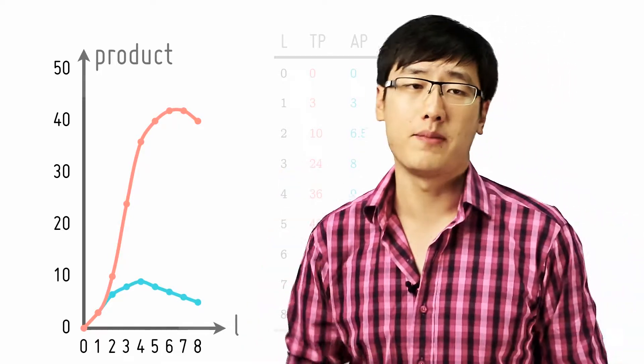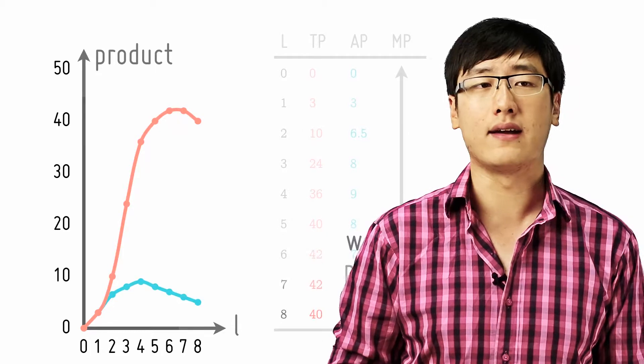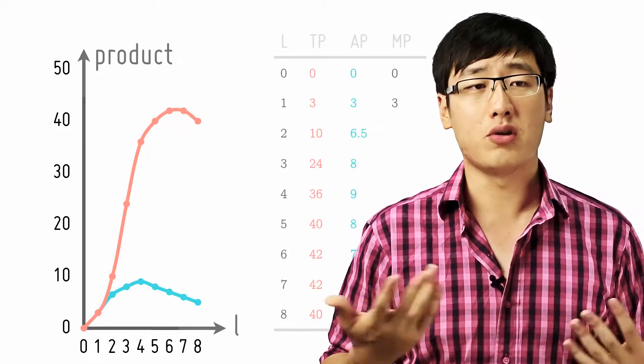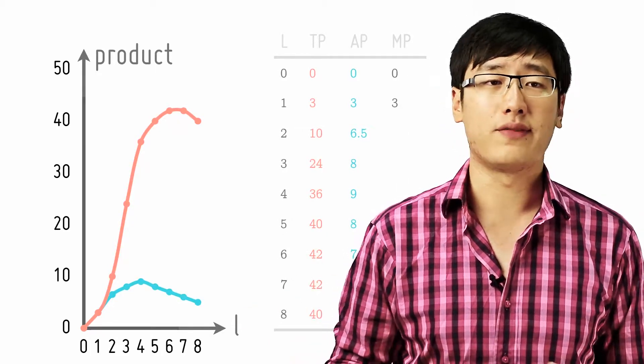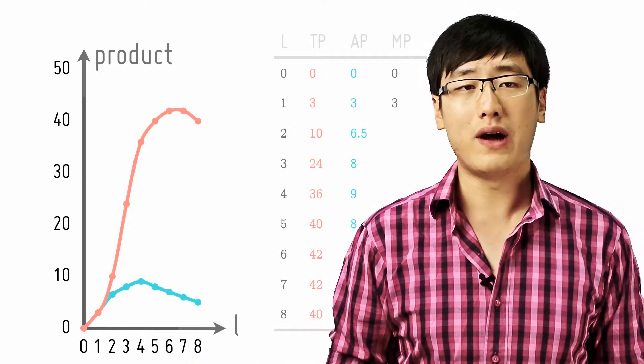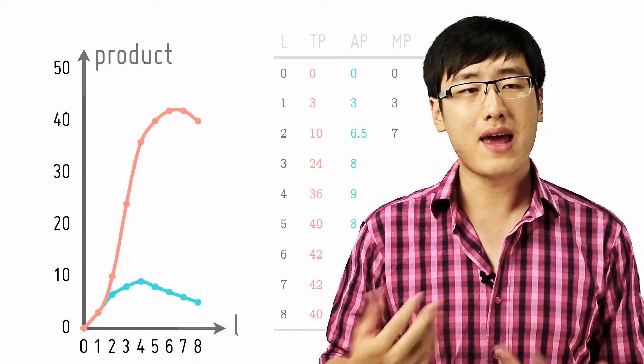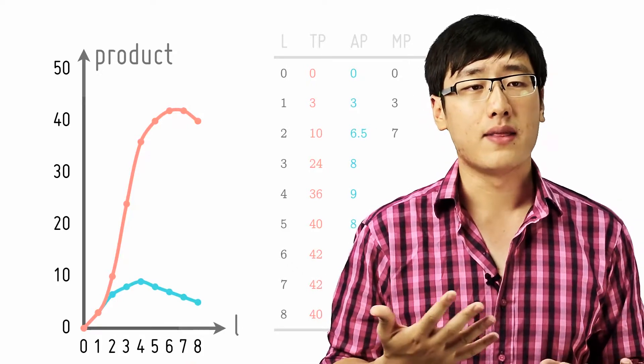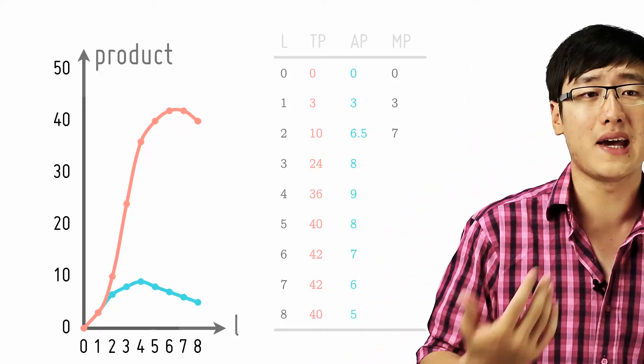So let's say from 0 to 1 worker you're adding 3 more units to the product. So the marginal product of the first worker is 3. From 1 to 2 I'm adding 7 units. So then the marginal product is 7 because they bring the total product to 10.